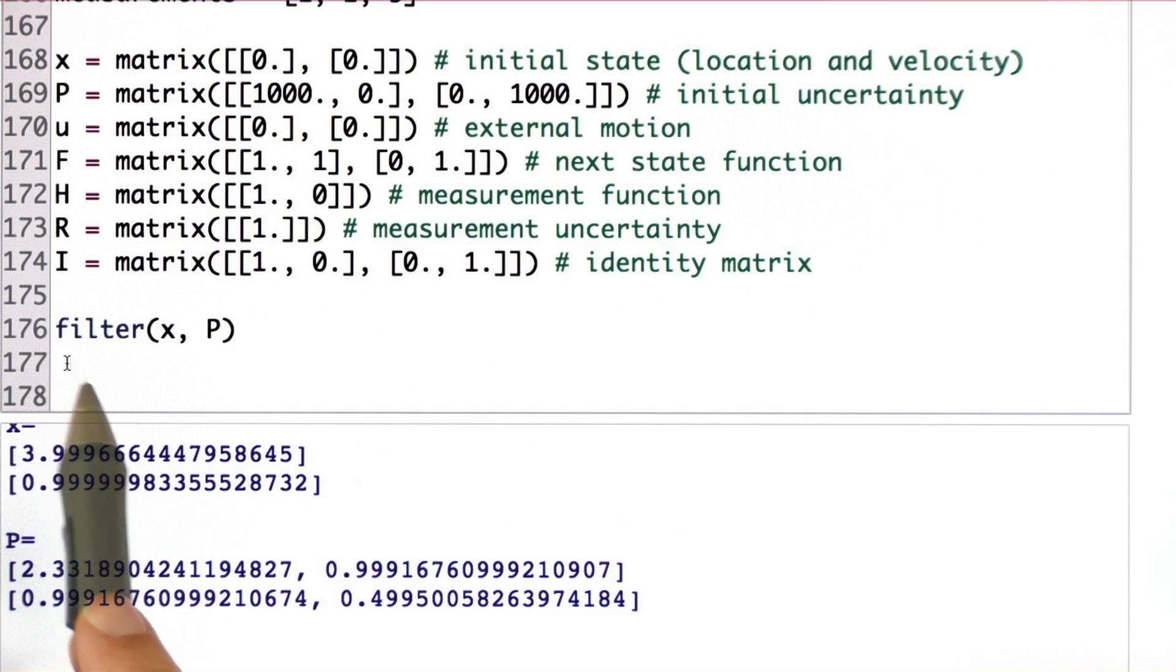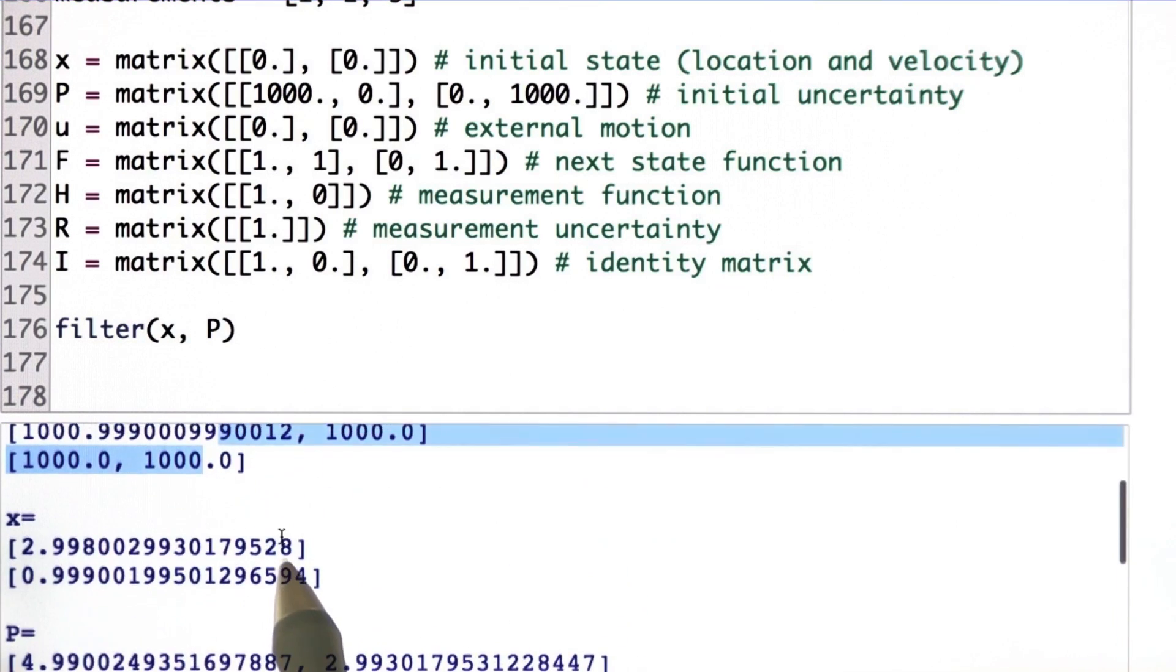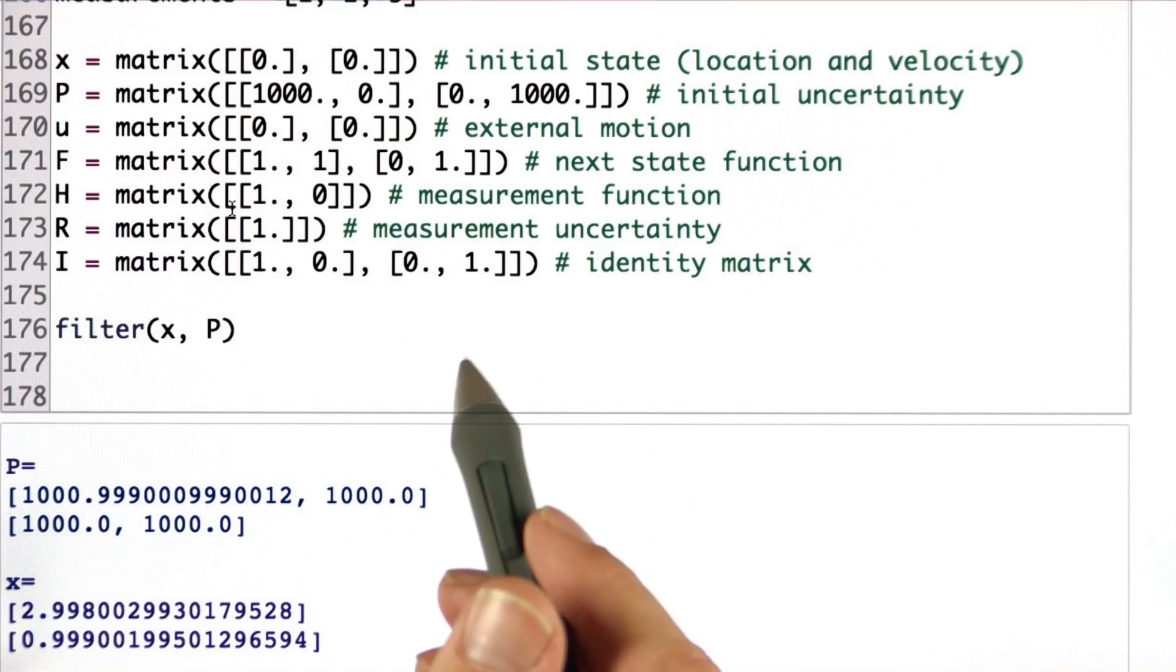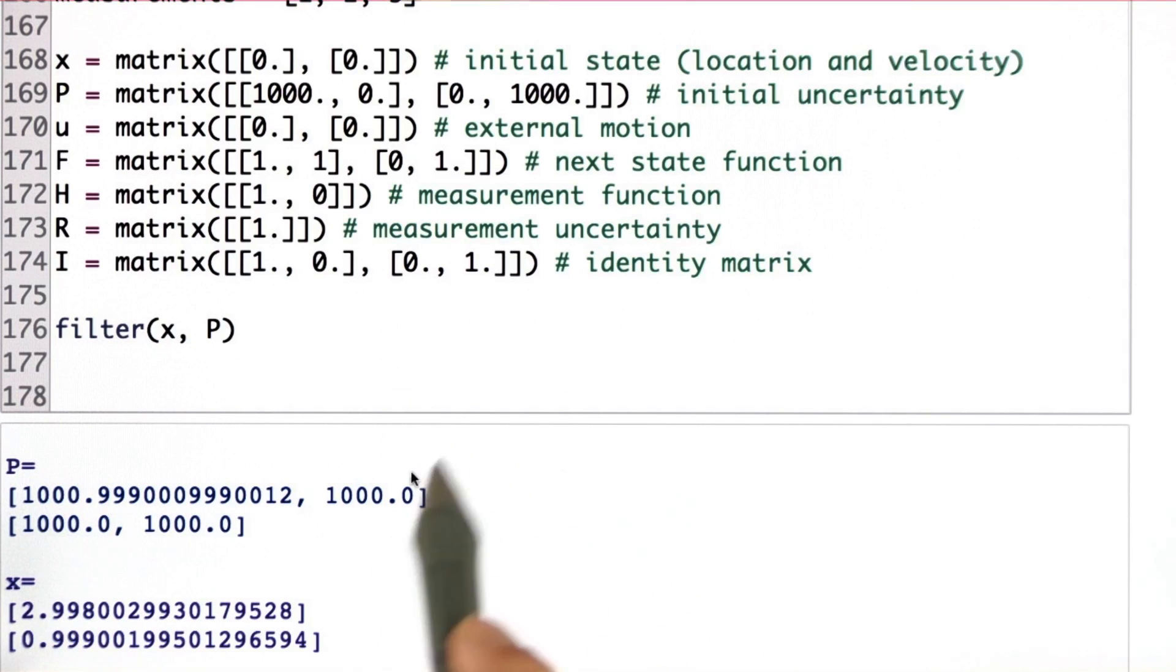So can you write the algorithm filter that outputs those exact values over here? This is an involved programming assignment. What you have to do is you have to essentially implement the equations I gave you. You have to familiarize yourself with the matrix class and then go and fill in the filter code in accordance to the things that I showed you for the multivariate Kalman filter.